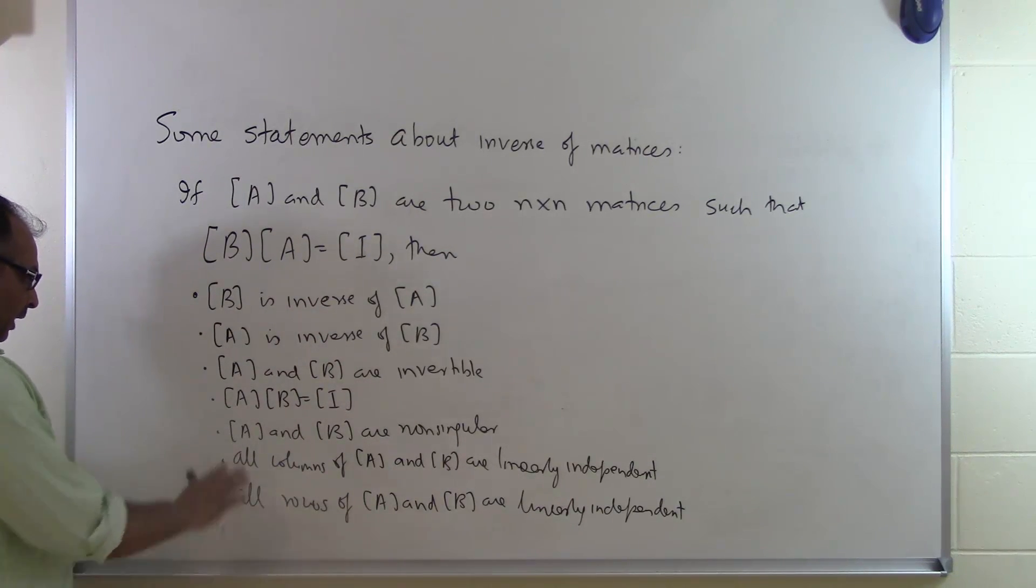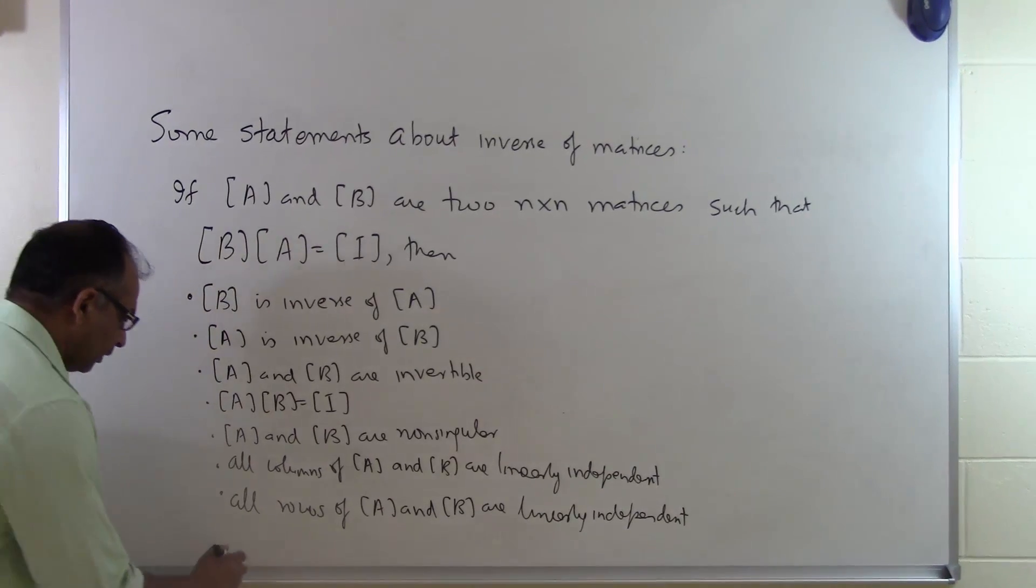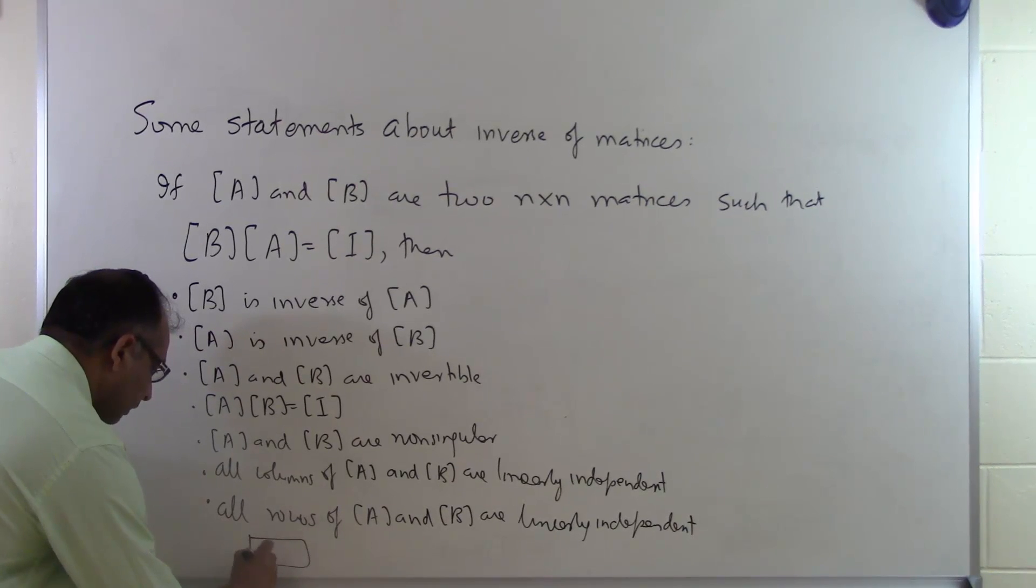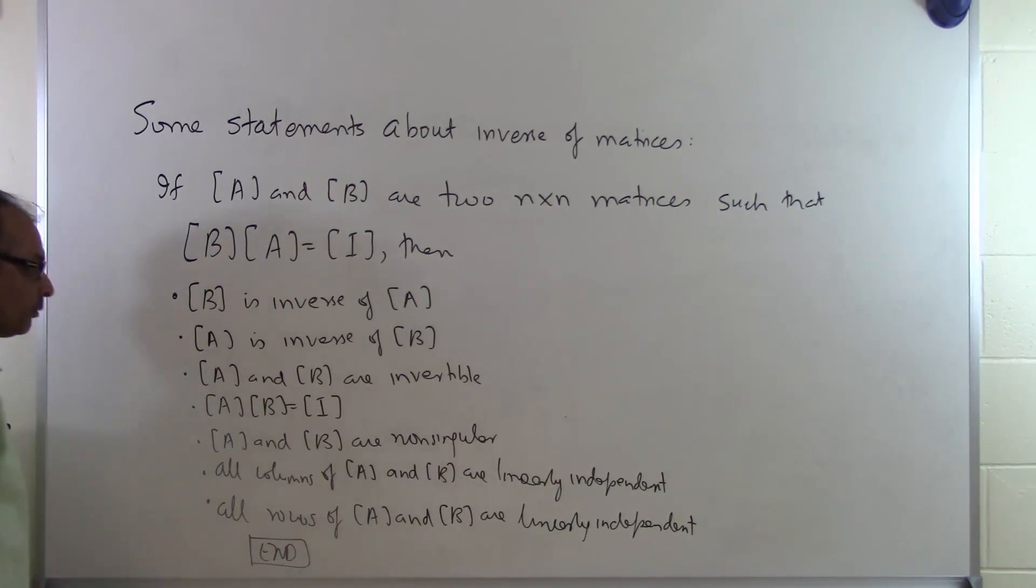A and B are invertible. A times B will be the identity matrix. A and B both are considered to be nonsingular. The columns of A and B are linearly independent, so are the rows of A and B which are linearly independent. And that is the end of this segment.